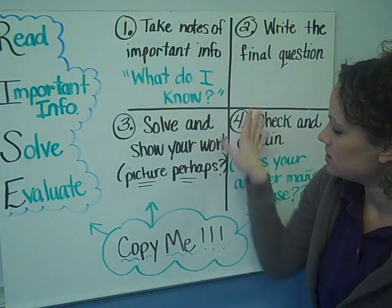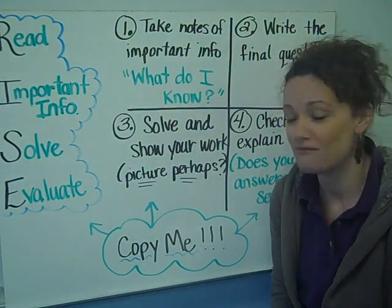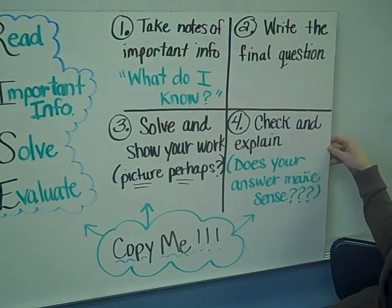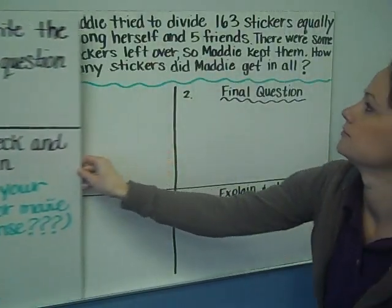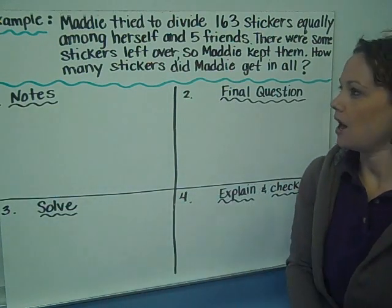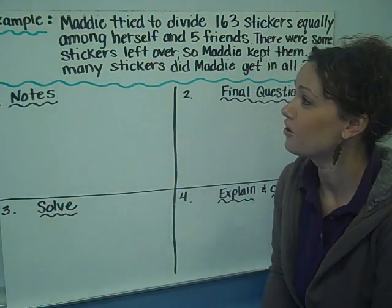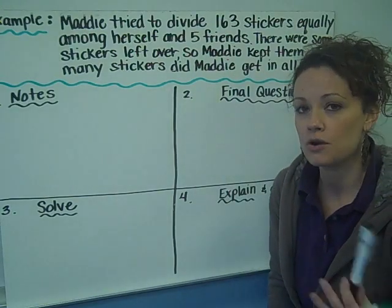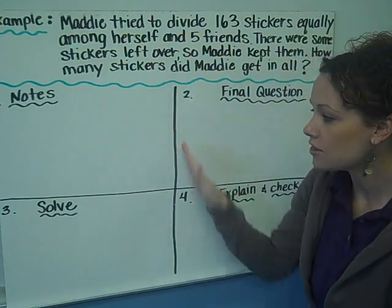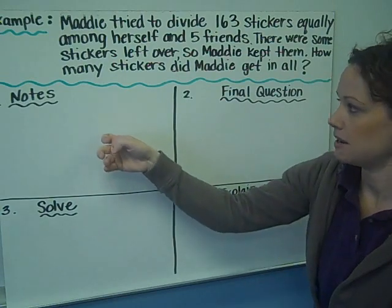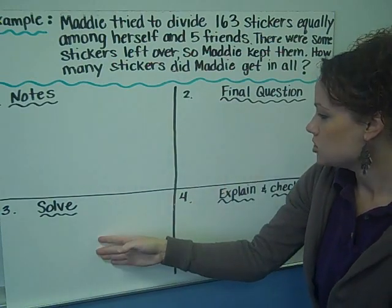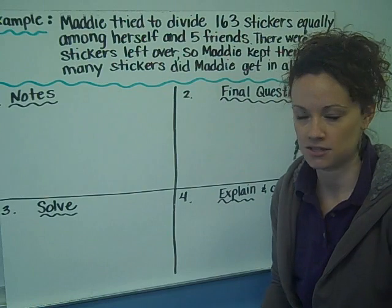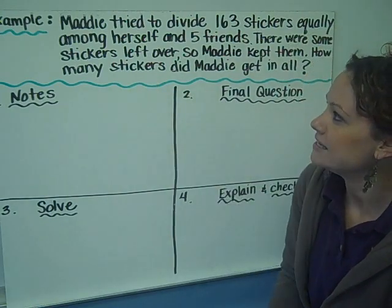Please copy both problem-solving strategies in box two of your homework sheet. Now we're going to get started with our first word problem. I'm going to read the problem first, then go through the four-square method — taking notes, writing the final question, showing my work and solving, and finally explaining and checking my answer.